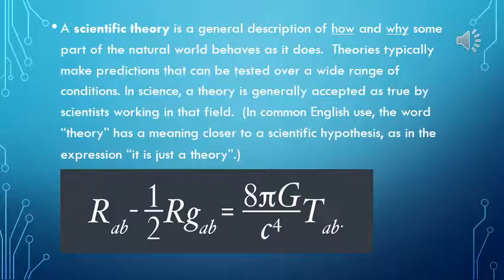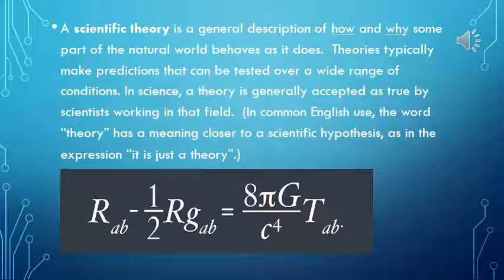A scientific theory is a general description of how and why some part of the natural world behaves as it does. In science, theories typically make predictions that can be tested over a wide range of conditions. A theory is generally accepted as true by scientists working in that field.